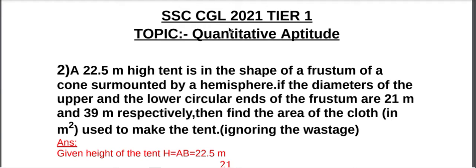SSC CGL-2021 Quantitative Aptitude Question number 2: A 22.5 meter height tent is in the shape of a frustum of a cone surmounted by a hemisphere. The diameters of the upper and lower circular ends of the frustum are 21 meter and 39 meter respectively. Find the area of the cloth in meter square used to make the tent, ignoring waste.